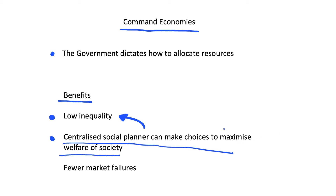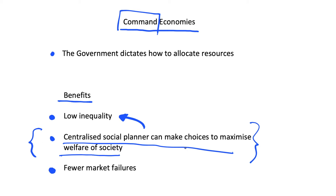On top of this, the centralised social planner can make choices to provision markets that offer positive externalities. This ties into the third point: fewer market failures. In a free market economy we tend to have monopolies, pollution, and negative externalities, and we might have missing markets — for example, healthcare and education may not be fully provisioned because they don't offer profits. We don't really have this problem in a command economy because the social planner makes the decisions and doesn't rely on profit to supply a good.